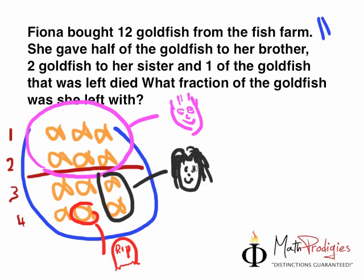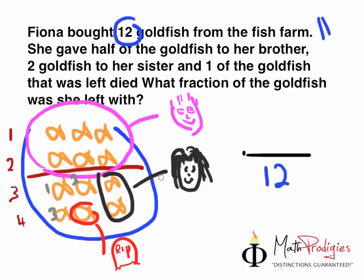So, what fraction of the goldfish was she left with? All you have to do is count the number of fish left: 1, 2, 3 — three goldfish were left. In fractions, you draw one straight line. The number below means the total — there were 12 total, so you write 12. How many are left? 3. So the answer is 3 over 12. But wait — can we make this even simpler? Yes, we can. Divide the top number by 3 to get 1, divide the bottom number by 3 to get 4. Hence, the answer equals 1 over 4.